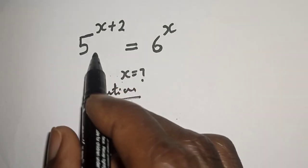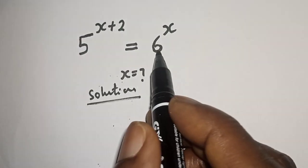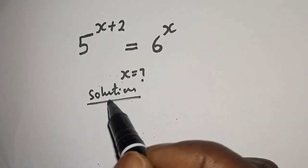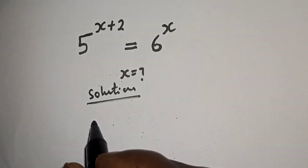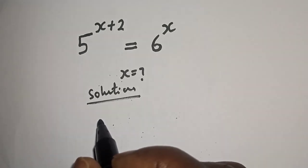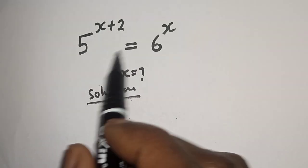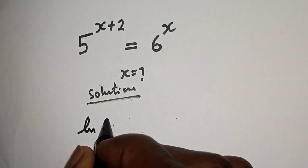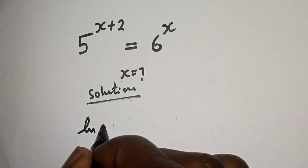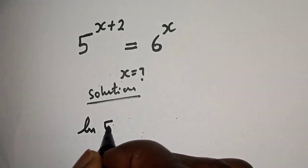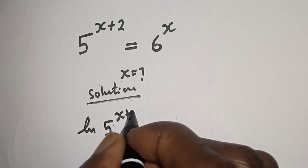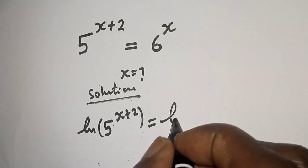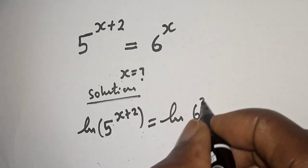The left hand side is 5 raised to power s plus 2 and the right hand side is 6 raised to power s. Let's take the natural log of both sides. That is: ln of 5 raised to power s plus 2 is equal to natural log of 6 raised to power s.